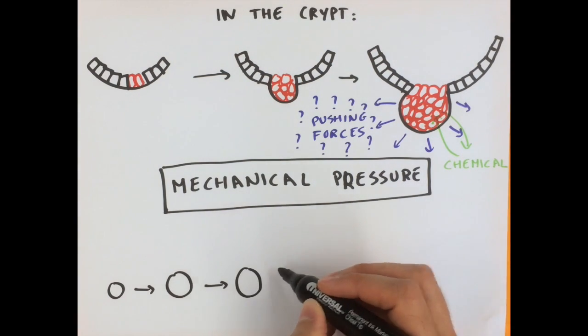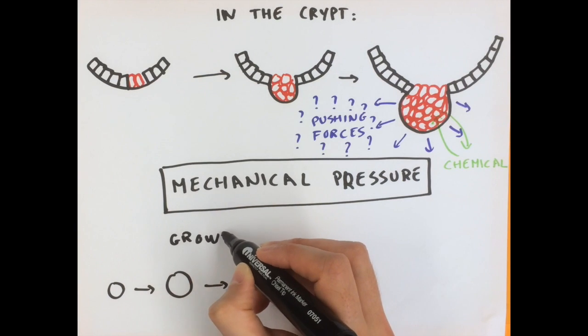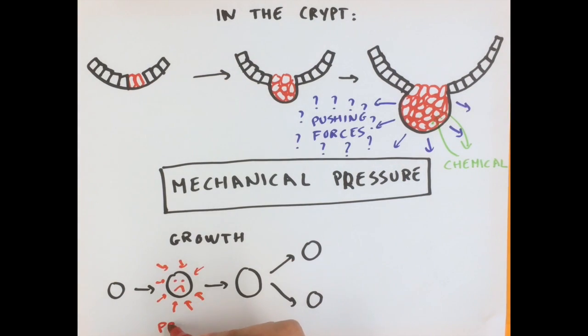Before dividing, a cell needs to grow. For instance, mechanical pressure could affect cell growth as it is more difficult to grow and then divide under pressure.